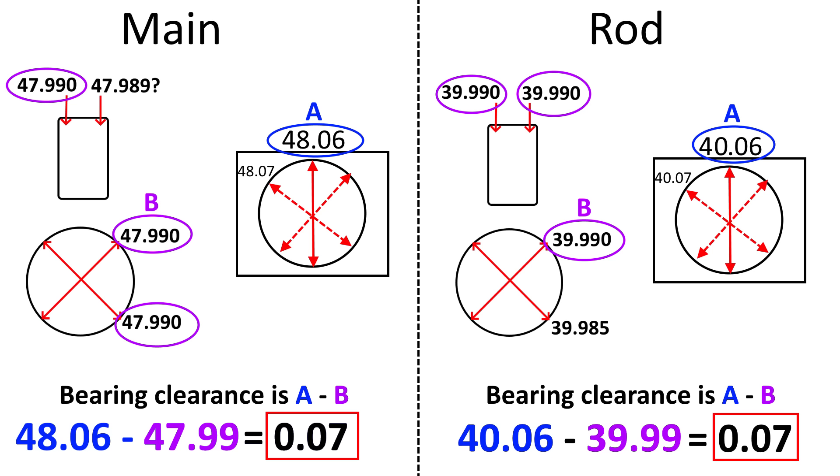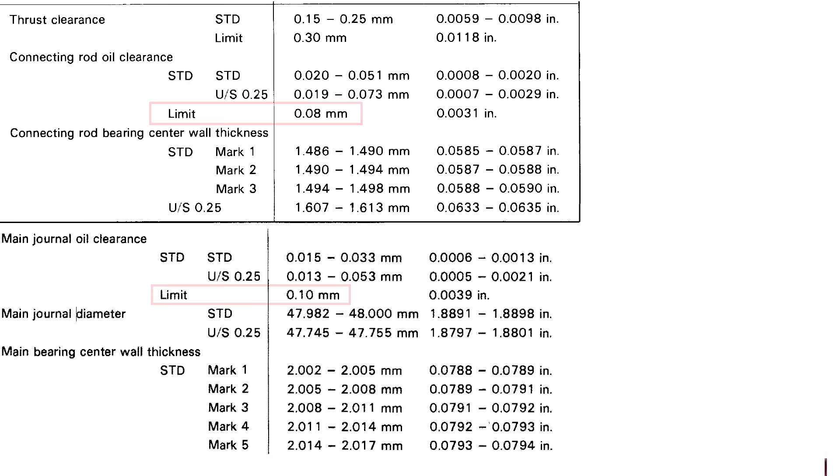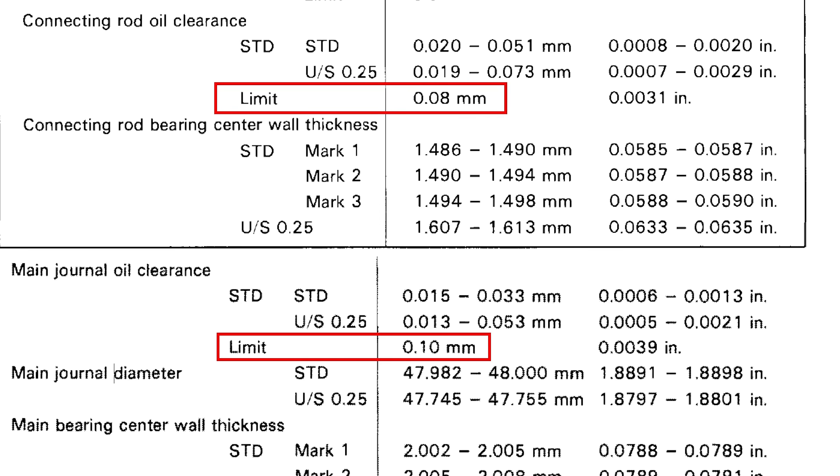Of course this is just the bearing clearance of one main bearing and one rod bearing and you need to repeat this whole procedure for every bearing inside the engine. As you can see we are definitely on the loose side but we are below the limit of what's acceptable inside this engine.